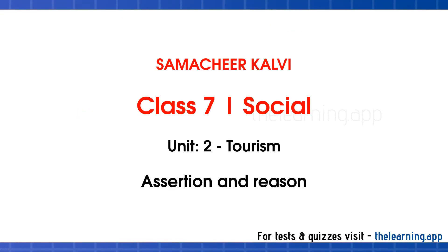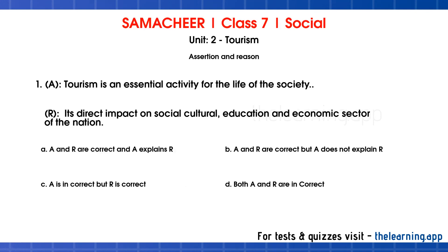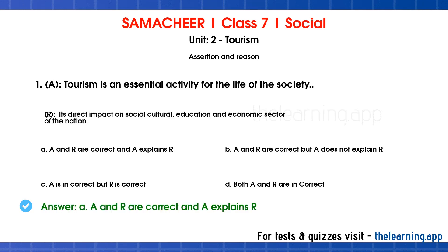Assertion and Reason. First question — Assertion: Tourism is an essential activity for the life of society. Reason: It has a direct impact on the social, cultural, educational, and economic sectors of the nation. Tourism is very important for government and society because of these wide-reaching impacts.